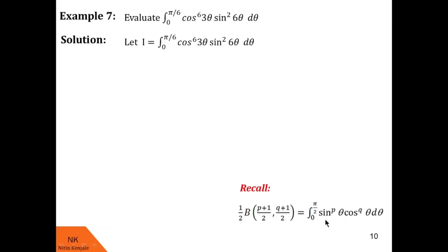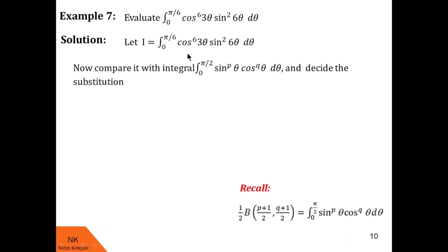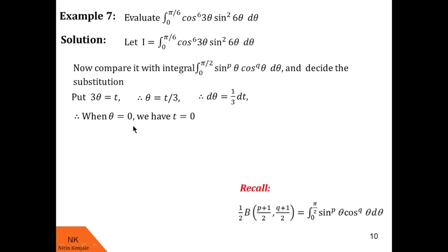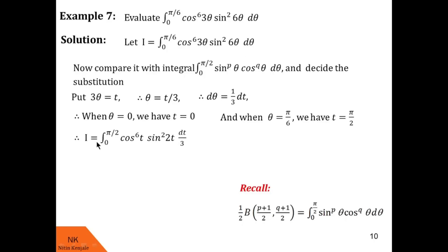The angle of sin is 6θ whereas in the standard form it is θ; similarly, the angle of cosine is 3θ whereas in the standard form it is θ. So we choose the substitution 3θ = t, giving θ = t/3 and dθ = dt/3. When θ = 0, t = 0, and when θ = π/6, t = π/2. Transforming integral I, it becomes the integral of cos⁶(t) · sin²(2t) · (dt/3) from 0 to π/2.